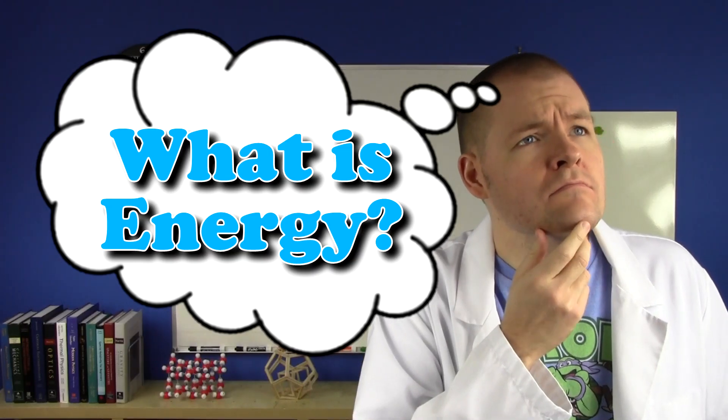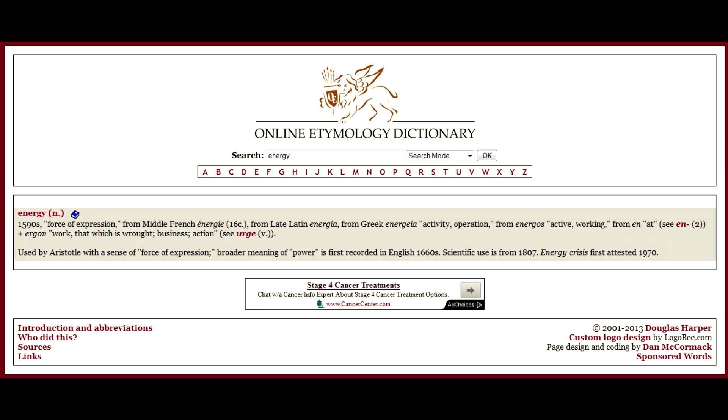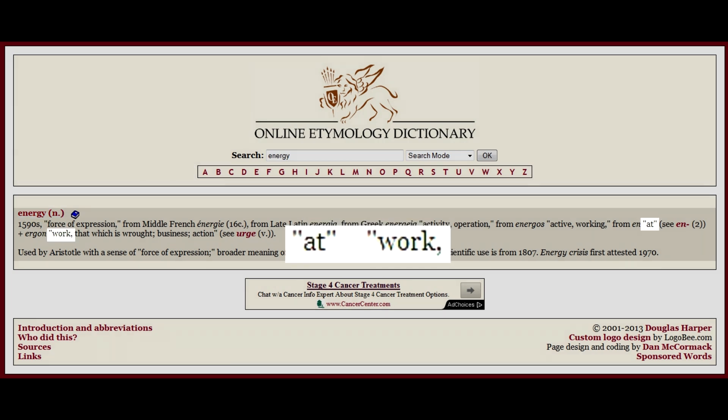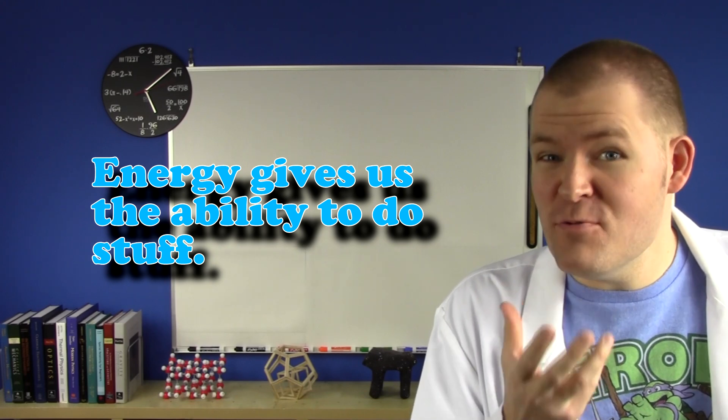What is energy? I mean, what is it really? The main problem here stems from our limited ability to define things in our language. So to deal with this problem, I started with the Online Etymology Dictionary to find the origin of the word itself, which turned out to be Ancient Greek for at work, suggesting only what I already knew. Energy gives us the ability to do stuff.